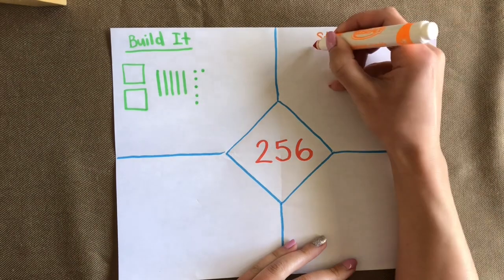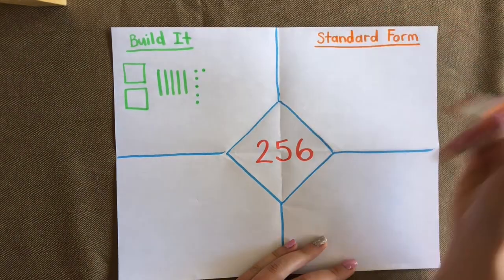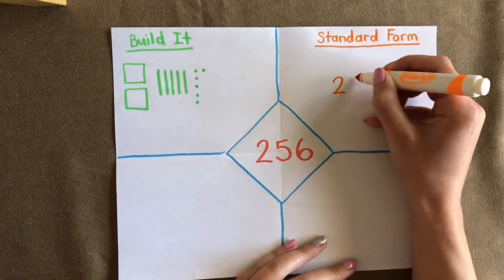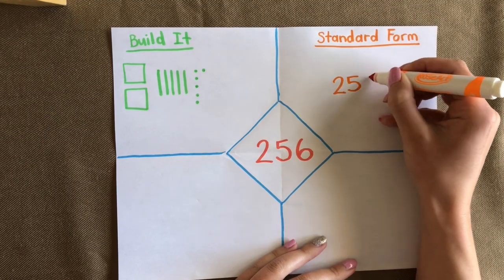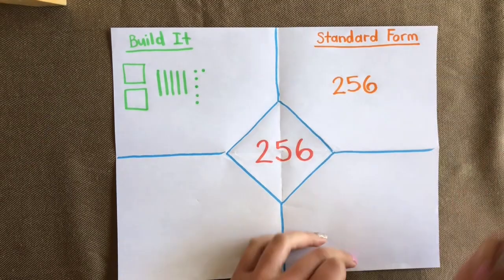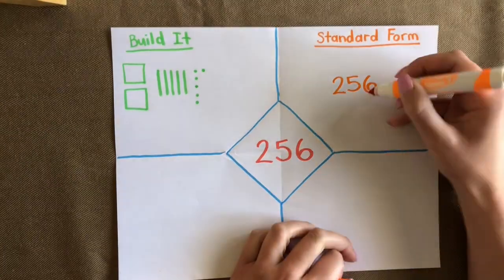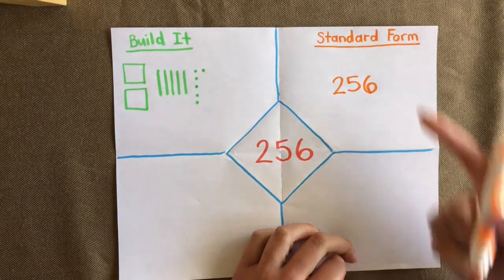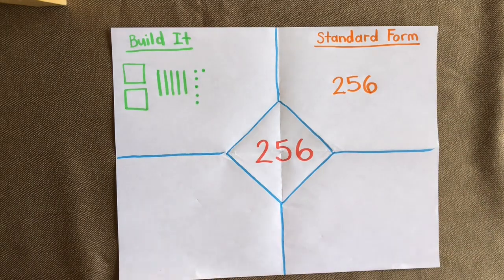Standard form is just the number written with digits, so 256 is how you write this three-digit number in standard form.